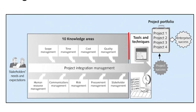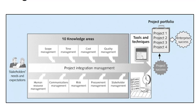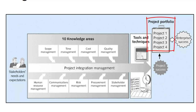This model shows that there are good tools and techniques that should be used to manage all of these 10 knowledge areas. For example, scope is managed using a tool called a work breakdown structure, and a schedule is used for time management. If you use these tools well, you increase the likelihood of project success. What's more, if all projects in one portfolio apply the same good tools and techniques across all 10 knowledge areas, the whole portfolio is more likely to be successful, leading to enterprise success as a whole.